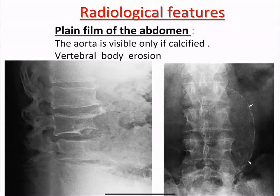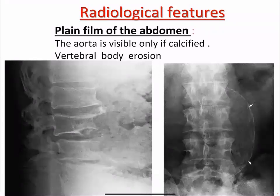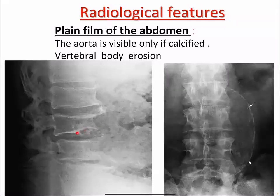Radiological features — plain film of the abdomen. The aorta is visible only if calcified. Vertebral body erosions are seen due to aortic aneurysm. Here we can see vertebral erosion and calcified aortic walls.